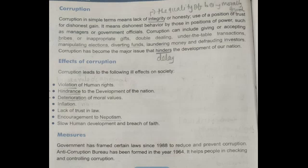Let's move on to corruption. Corruption is dishonest behavior by people in positions of power — it can be anybody from a manager to a government official. Corruption can include giving or accepting bribes or inappropriate gifts, double dealing, under-the-table transactions, manipulating elections, diverting funds, and laundering money — passing illegally obtained money through a bank or business to conceal its origin — and defrauding investors. Corruption erodes the trust we have in the public sector. When a person has to pay something extra to get his work done, his human rights are violated, and this leads to more and more corruption and stalls the development of a country.